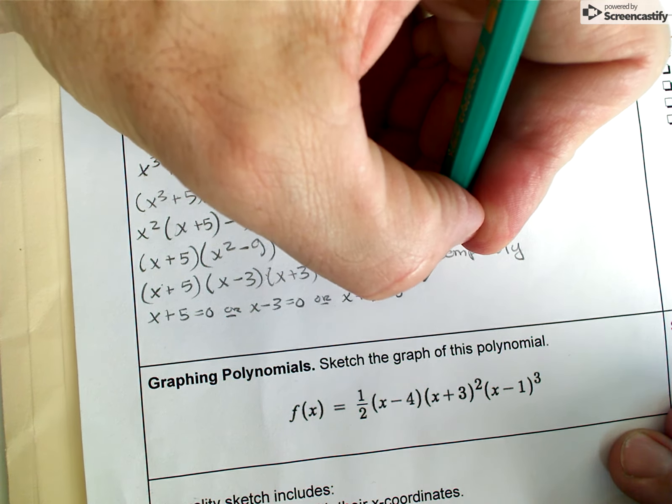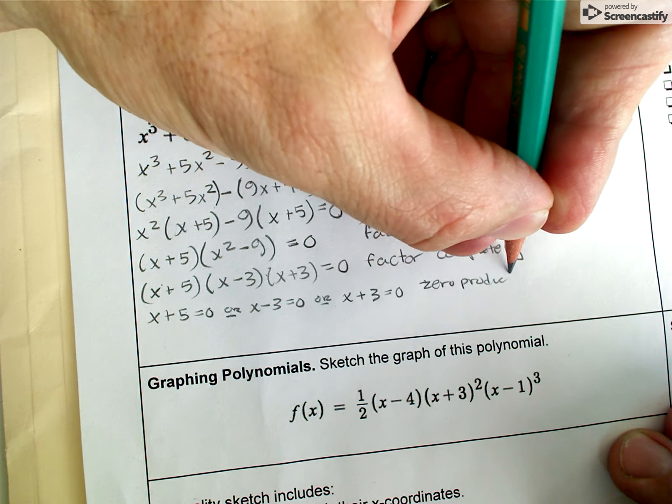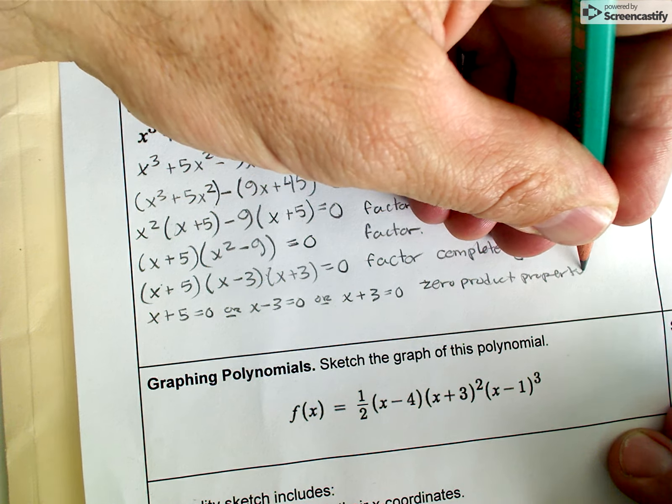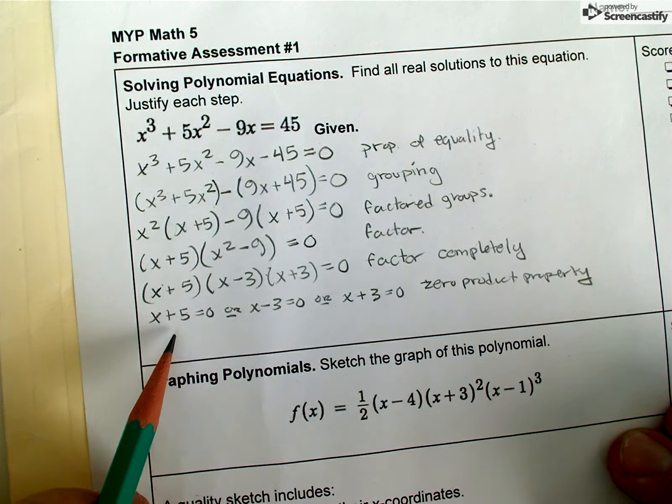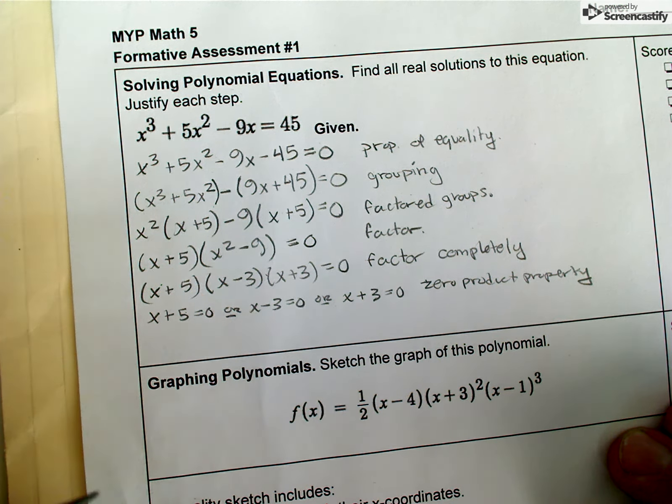Now I can set each of these factors equal to zero - one of them or the other one or the other one equals zero - and that's by the zero product property.